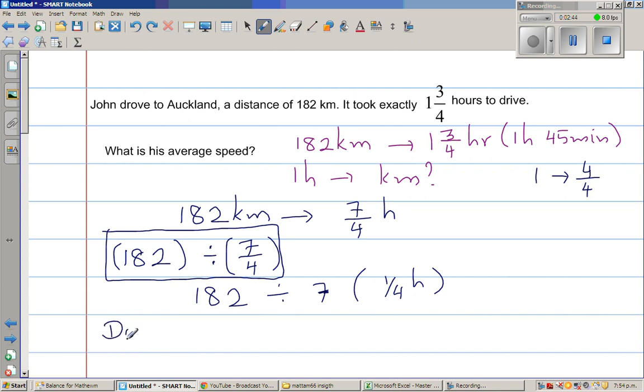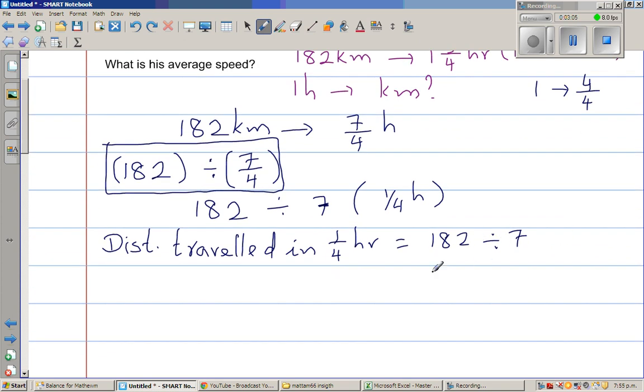I will write like this: distance travelled in a quarter hour would be 182 divided by seven. I don't like to use calculator until it is absolutely necessary. So I am going to say this is 140 plus 42 divided by seven. I know 14 divided by seven is two, 140 divided by seven is 20. And then 42 by seven is six. So this is nothing but 26. So in other words, distance travelled in a quarter hour is 26 kilometers.